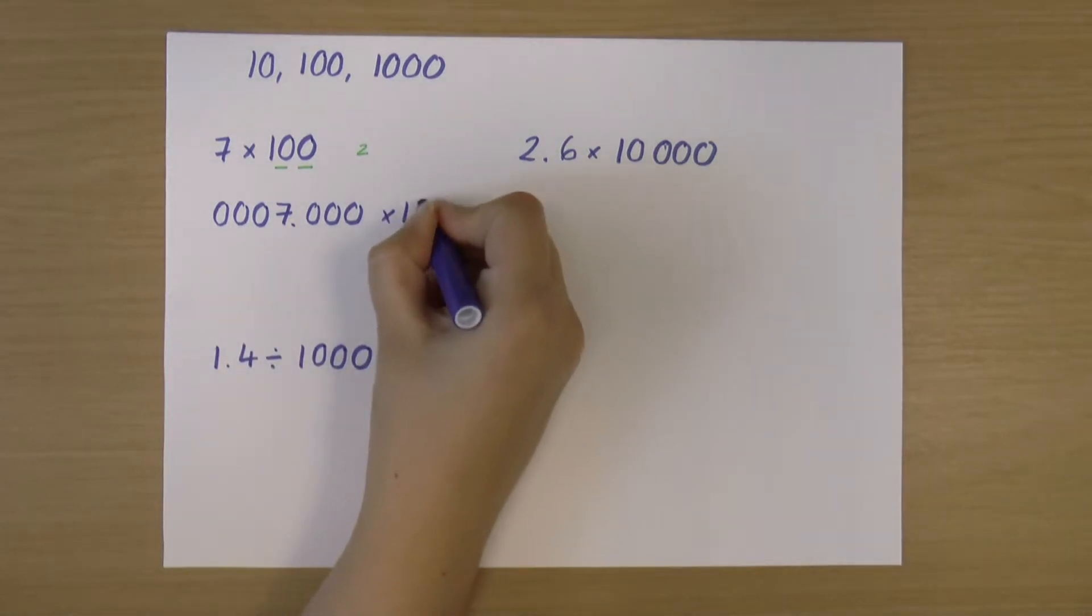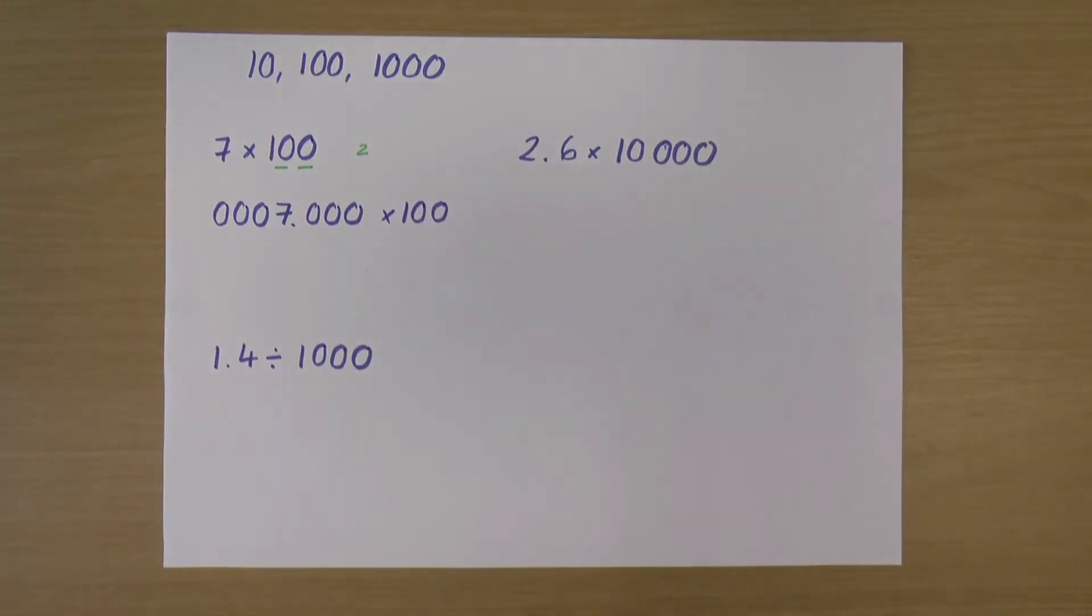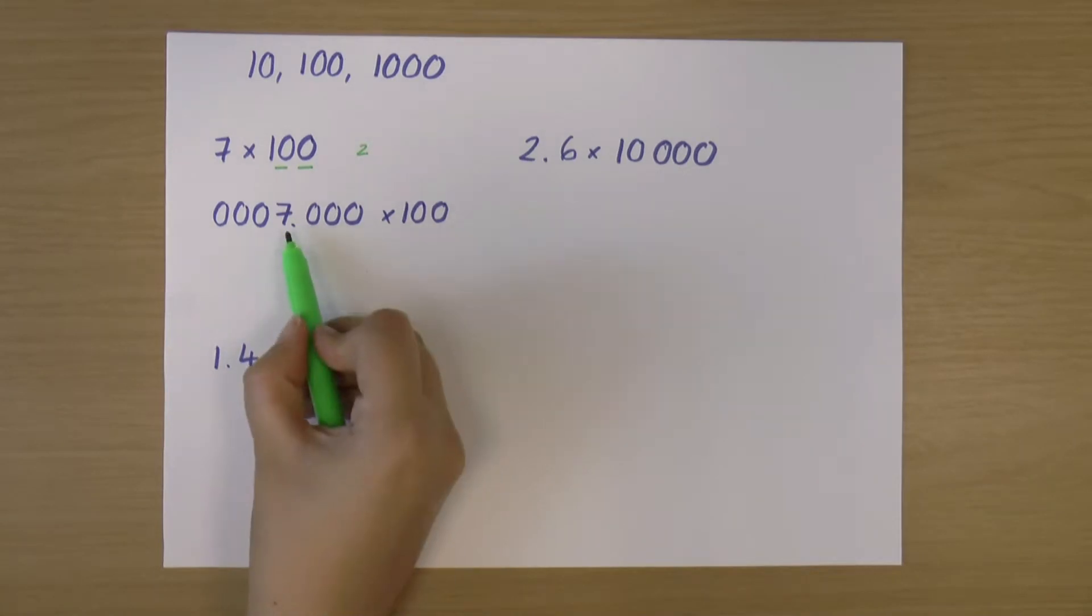So I am trying to multiply this by 100. And when I'm multiplying, what I can do is move my decimal point. Actually, technically I'm moving the numbers, not the decimal point, but it's a good way of thinking about it that we're moving the decimal point.